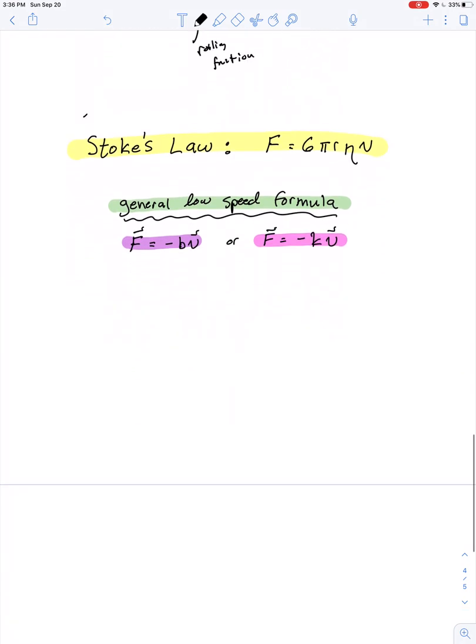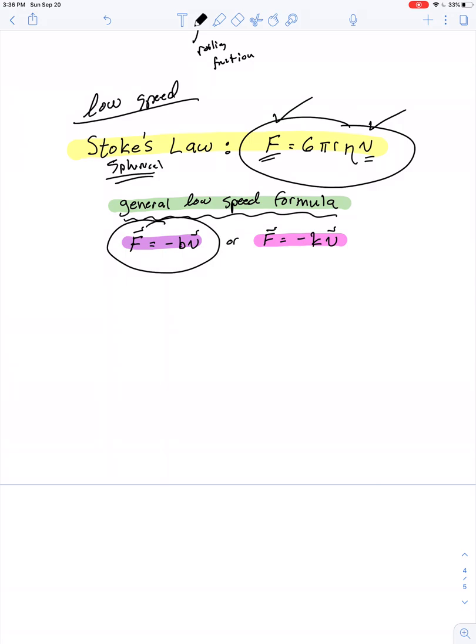So at low speed, a spherical object is governed by Stokes' law and it's an equation that tells us velocity influences the force according to this equation. In general, if the object isn't spherical, we can state the equation more generally as F equals BV or F equals KV. And again, at high speed, the force is proportional to velocity squared as opposed to just velocity to the first at low speeds. So in our next video lesson, we'll show how we can use equations of this form to derive expressions for speed as a function of time for objects that are moving under the combined influence of gravity and air resistance.